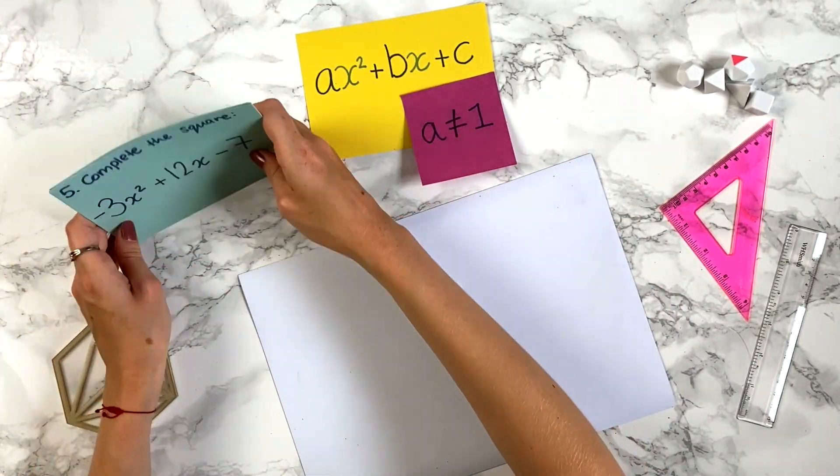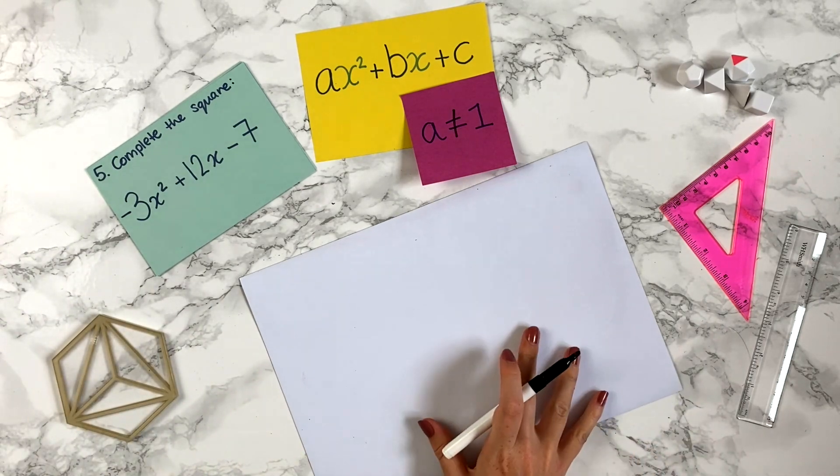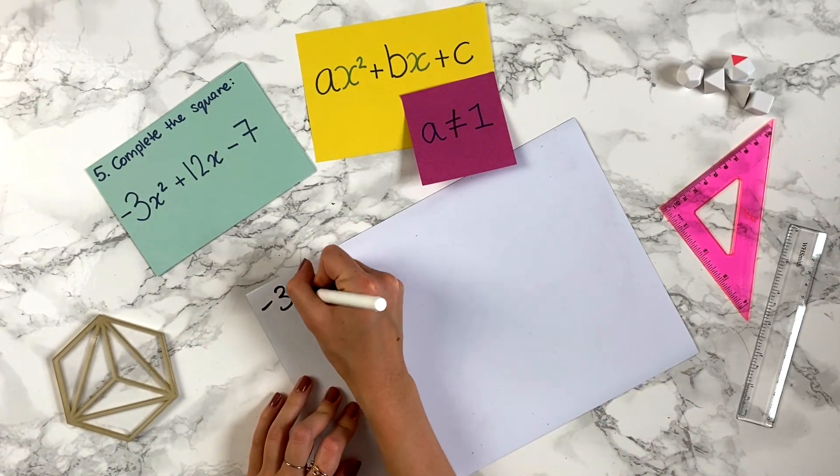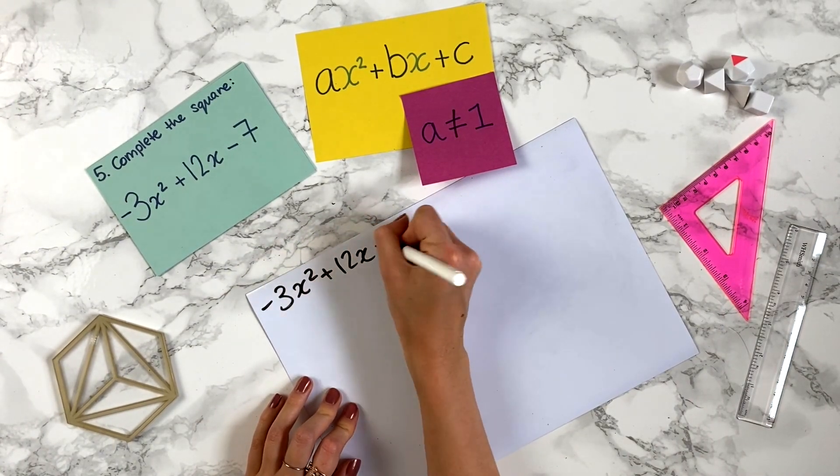Let's try one more question like that. Complete the square for minus 3x squared plus 12x minus 7. So again I'm going to write out the question because it's a bit more complicated, so minus 3x squared plus 12x minus 7.